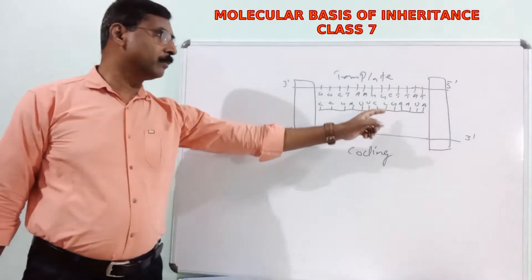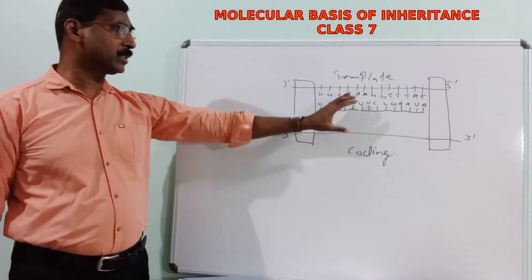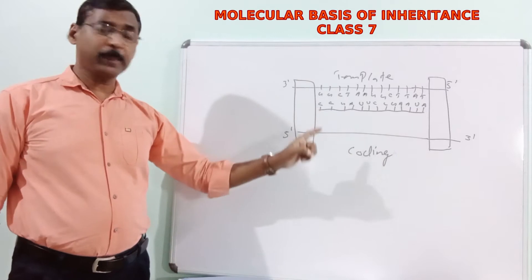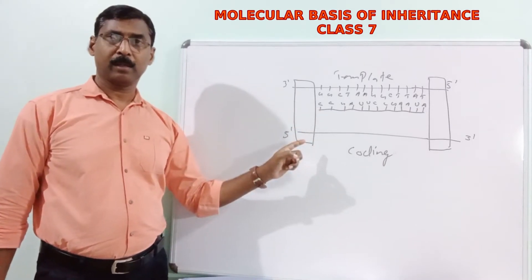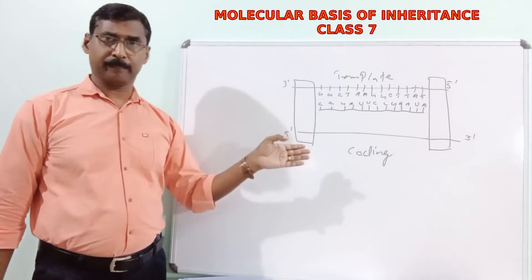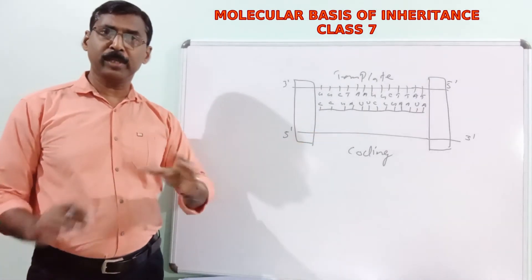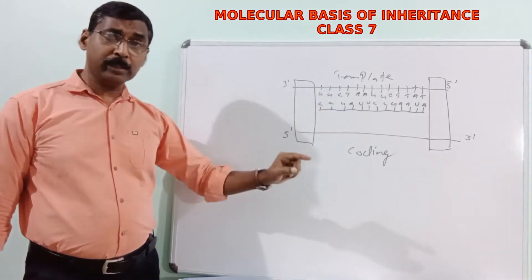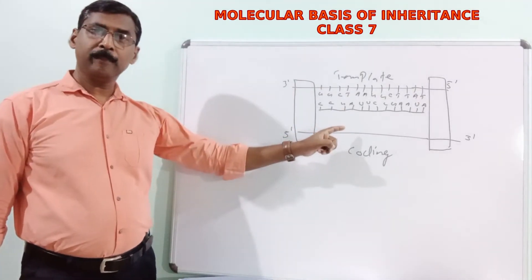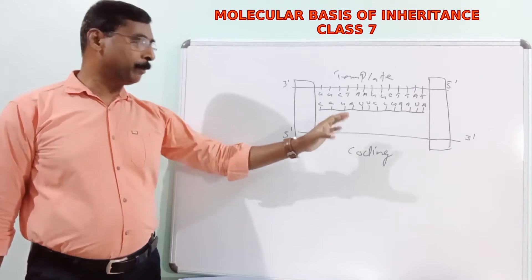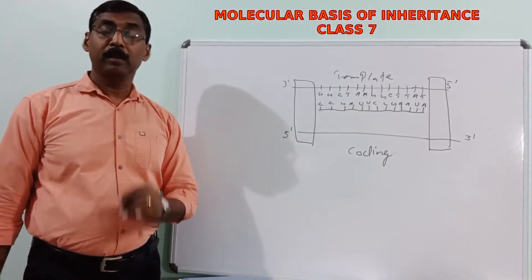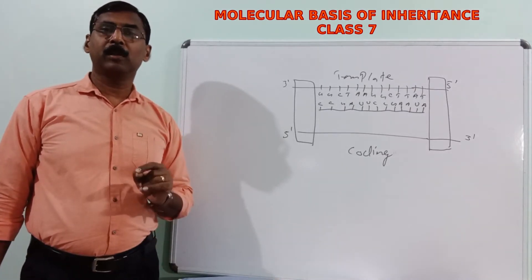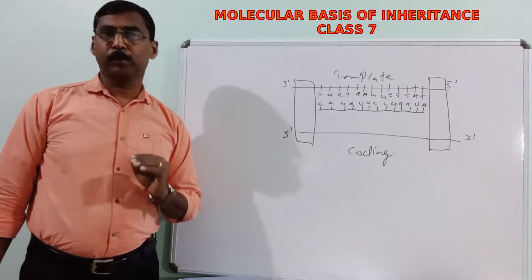This mRNA formed would be released from the nucleus, because transcription takes place in the nucleus of eukaryotic cells since DNA is located there. In prokaryotes, there is no definite nucleus, so transcription takes place in the cytoplasm itself. In eukaryotes, after transcription, the mRNA is transported to the cytoplasm, where the next step of the central dogma takes place — that is, translation or protein synthesis.